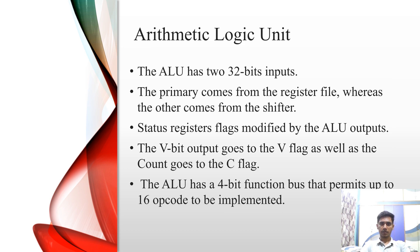Moving on to the arithmetic logic unit, the ALU has two 32-bit inputs. The primary comes from the register file whereas the other comes from the shifter. The status register flags are modified by the ALU outputs. The V-bit output goes to the V-flag and similarly this count goes to the C-flag. The ALU has a 4-bit function that permits up to 16 opcodes to be implemented.